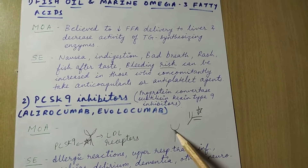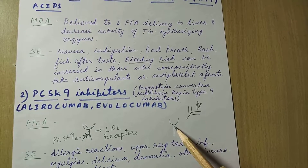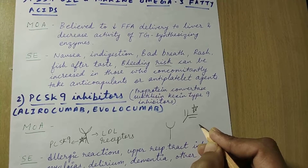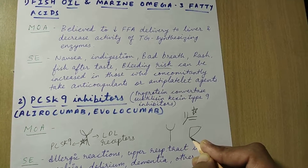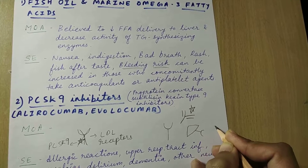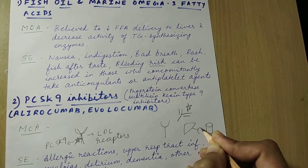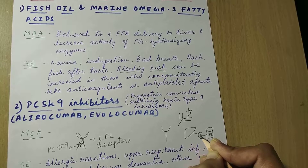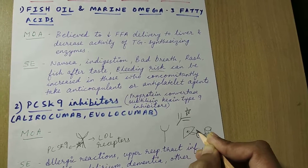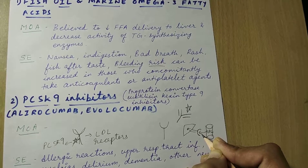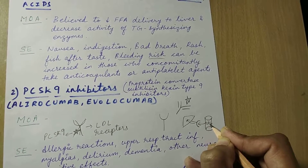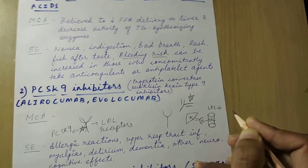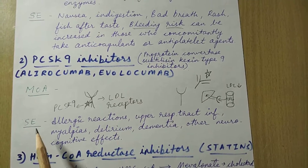Because the number of LDL receptors on the liver increases, the liver is able to take more LDL from the blood. The LDL receptors are necessary to take LDL from the bloodstream into the liver. When the number of LDL receptors increases on the surface of the liver, the liver takes more LDL from the blood, and thus the level of LDL in the blood decreases. This is the mechanism of PCSK9 inhibitors.